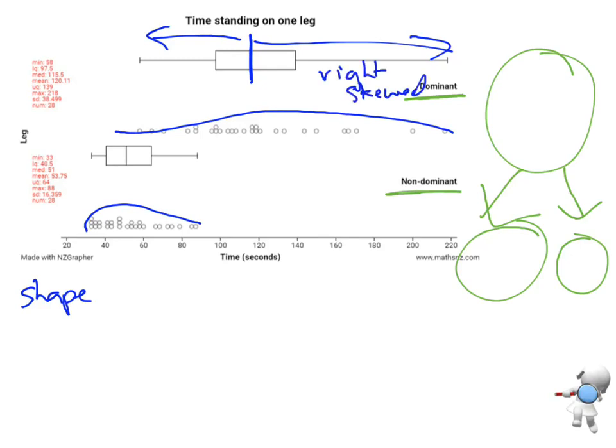And equally for the non-dominant, it's a little bit easier to see. That distance versus that distance. Again, it's a longer tail on the right-hand side. So that is going to be right-skewed. That's our first comment.